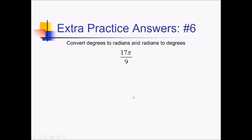On this problem, to convert into degrees we have to multiply by 180 over pi. The pi's are going to cancel. 180 over 9 is going to be 20; 20 times 17 is going to be 340 degrees.